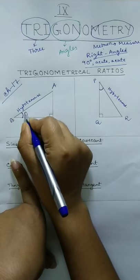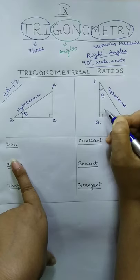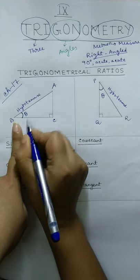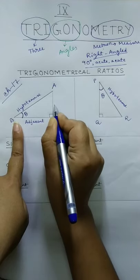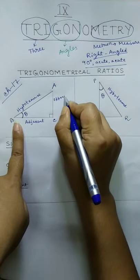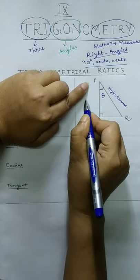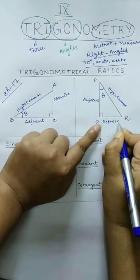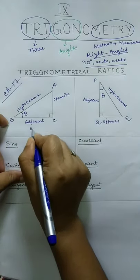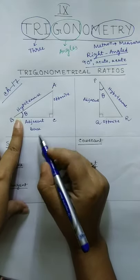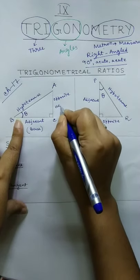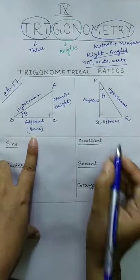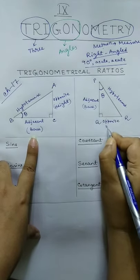We will write the chosen angle as theta. The side adjacent to theta is known as adjacent, and since the other side is opposite to this angle, we will name it opposite. Similarly, we can also use the names base and height — according to the acute angle, we name it as base and height. Either you name it by adjacent/opposite or by base/height.